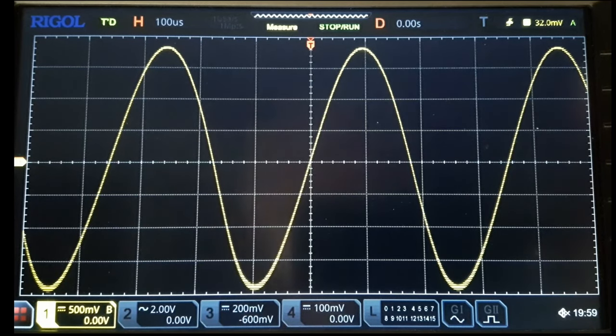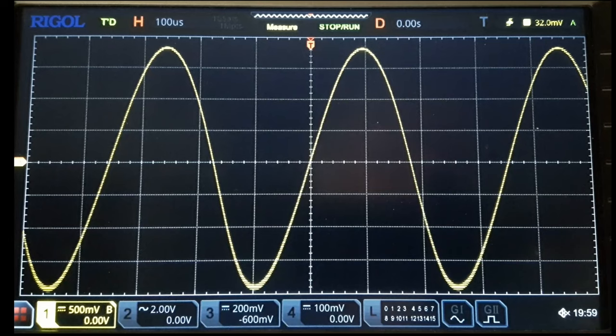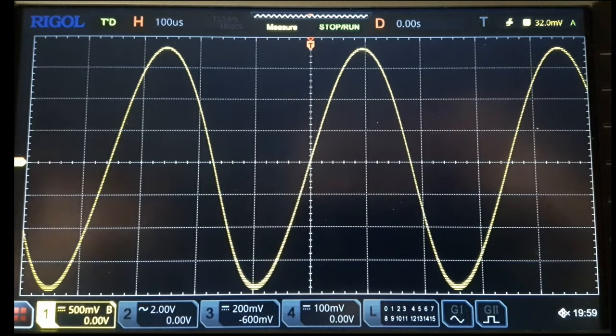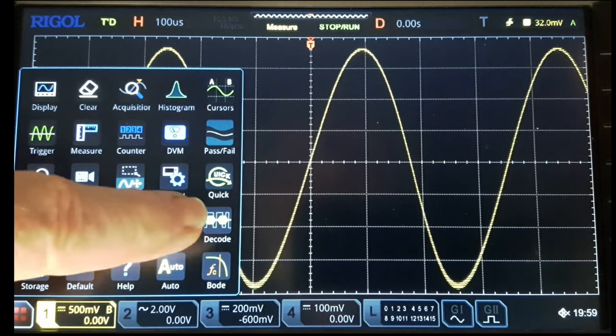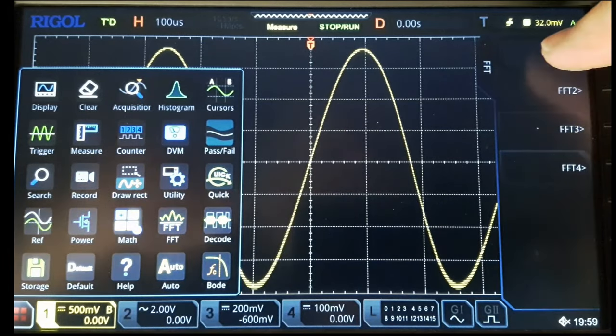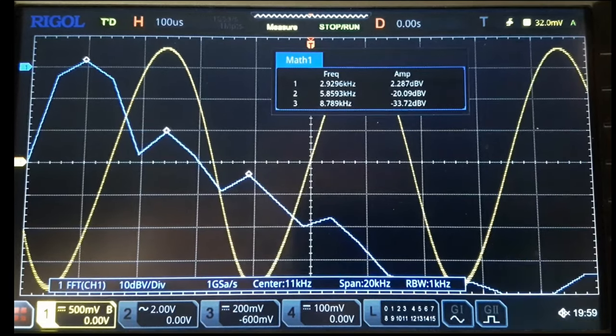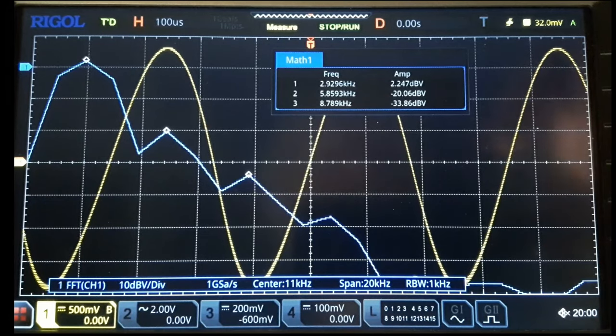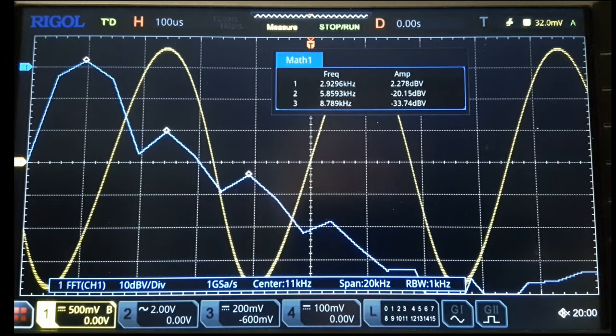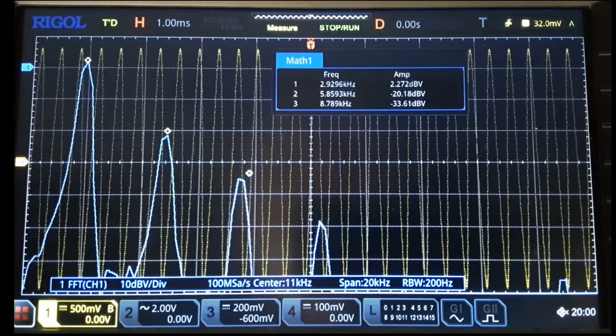And we'll take and do some math on this thing and we'll use the Fast Fourier Transform. Basically the spectrum analyzer that's built into this thing. And we'll have a closer look at some of the things that our eye can't see. And we'll turn these on. Turn this on.